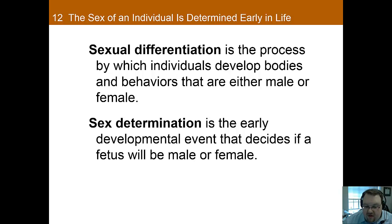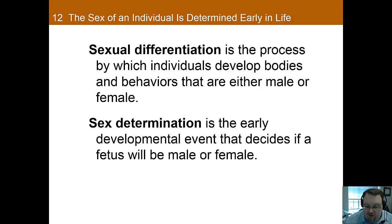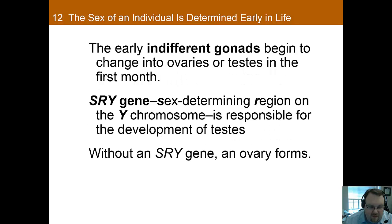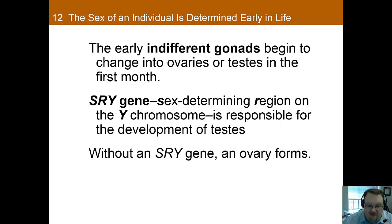If it's an X, the child will develop as a female, whereas if it's a Y, the child will be a male. At least this is how it usually happens as you'll see. Early in development, children have undifferentiated gonads, which is why the sex of the baby cannot be determined early on by an ultrasound. However, this is changed by the SRY gene.